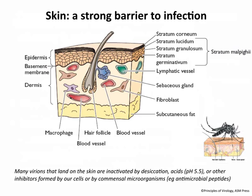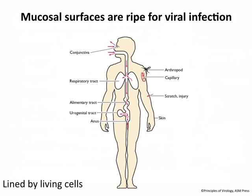The skin also has other defenses: low pH, and microbicides produced by our commensal bacteria that are antiviral. Papillomaviruses can get in through the epidermis via a tiny scratch, replicating in the living epidermal cells. Ways to breach skin include mosquito bites, needle sticks, cuts, and animal bites — a dog bite can spread rabies. Raccoons and bats can all bite you and spread viruses through your skin. So skin isn't perfect.